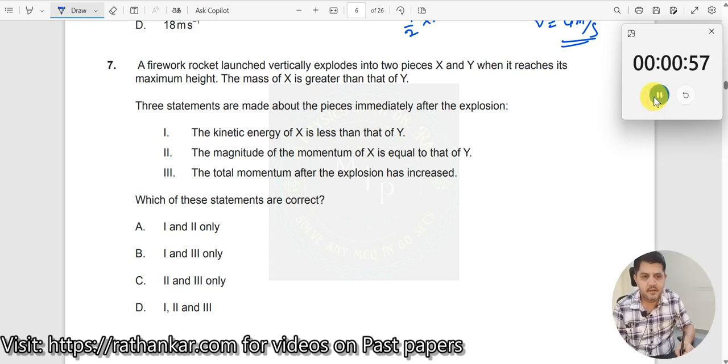Question number 7. A firework rocket launched vertically explodes into two pieces X and Y.